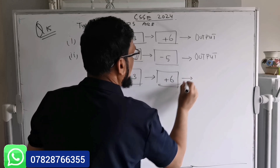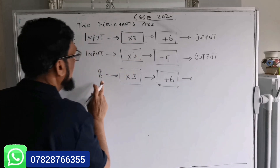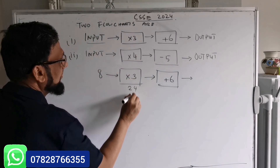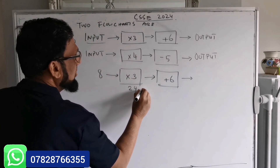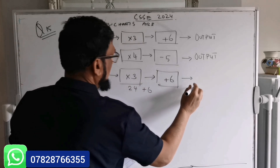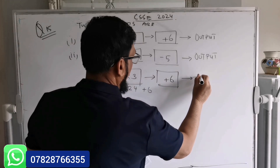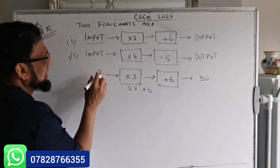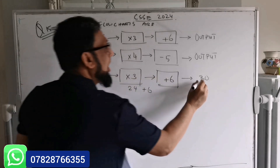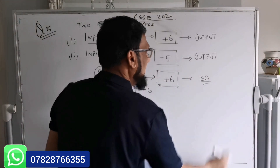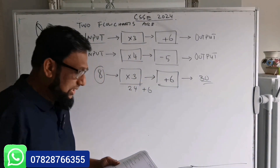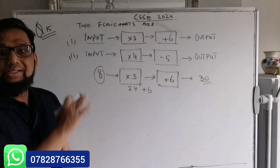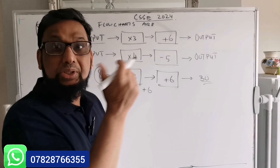For example, if the input is 8, then using flow chart number one: 8 times 3 is 24, and 24 plus 6 is 30. So the output will be 30. This example is already given in the question.